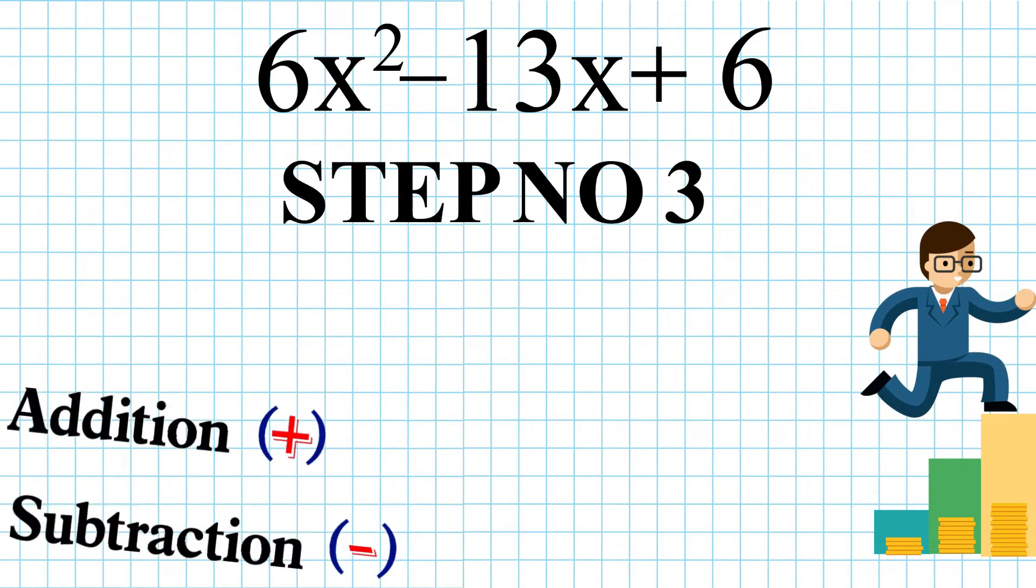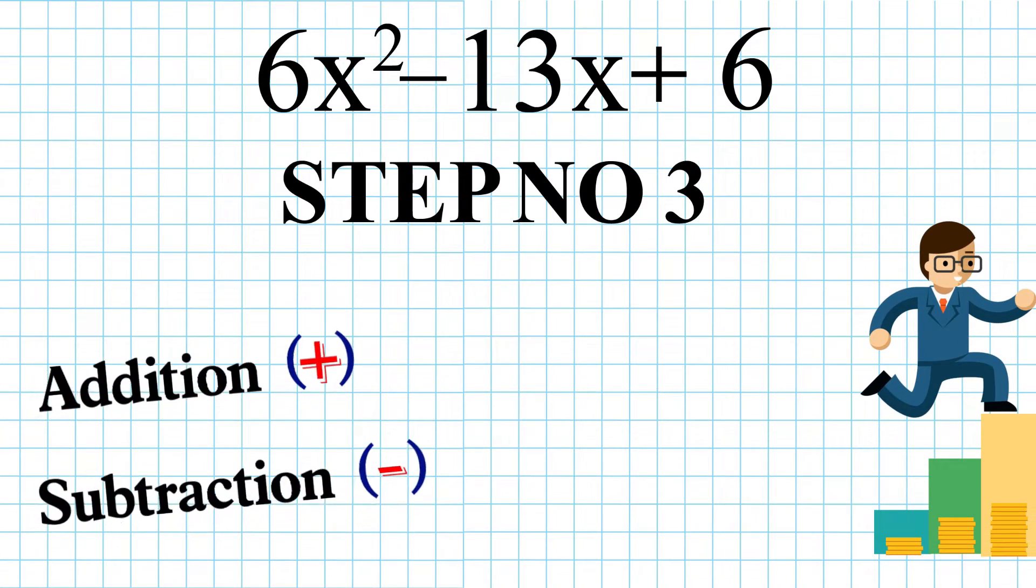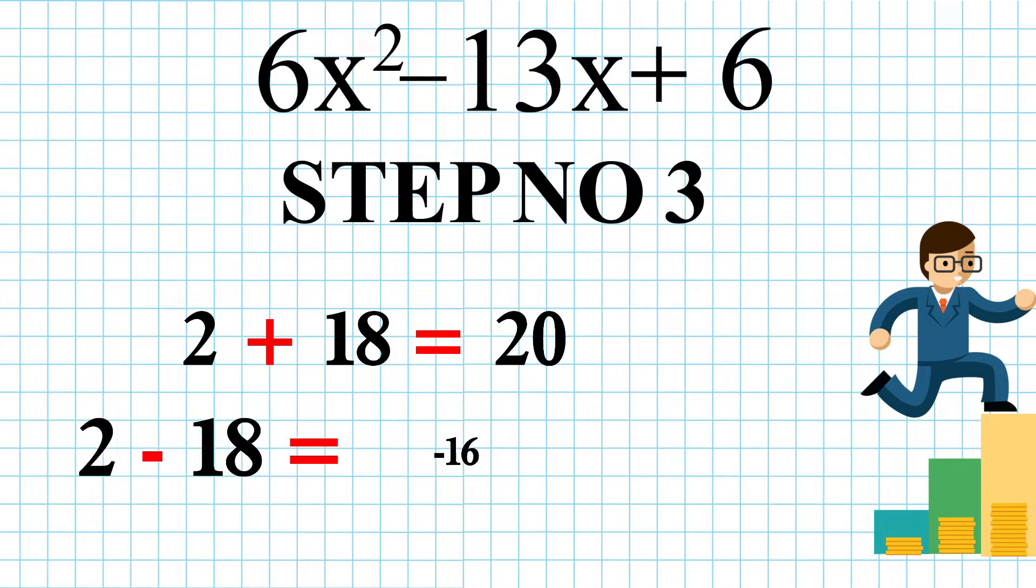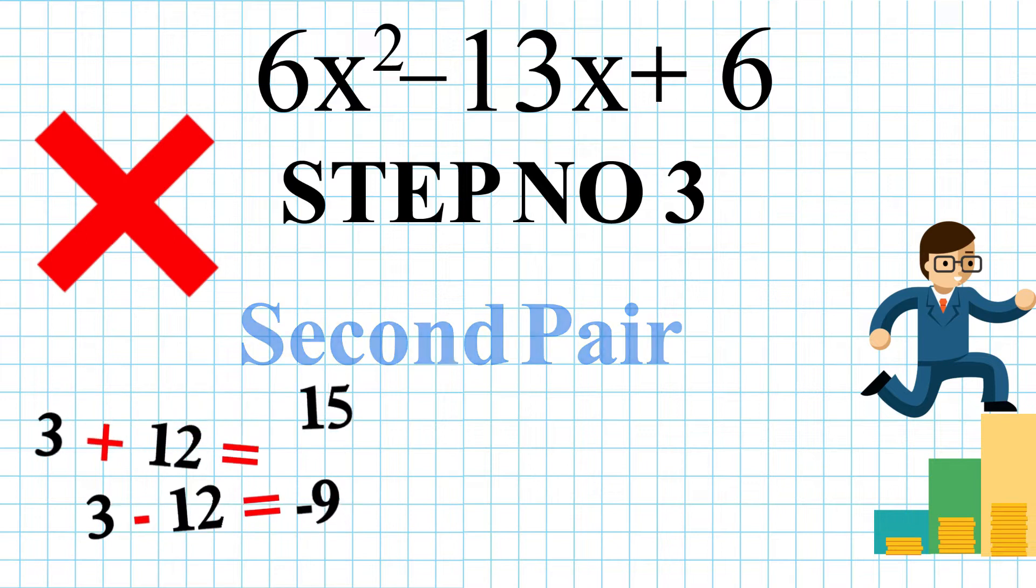Now, do the addition or subtraction within the pairs to see if their answer is 13 or not. By adding 2 and 18, we get 20 and by subtracting them, we get 16. So, this is not the correct pair. The second pair, 3 and 12. By adding them, we get 15 and by subtracting them, we get 9. This too is not the correct pair.